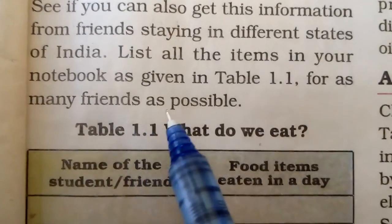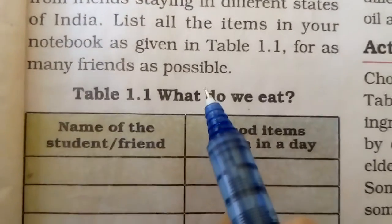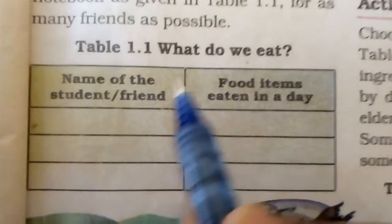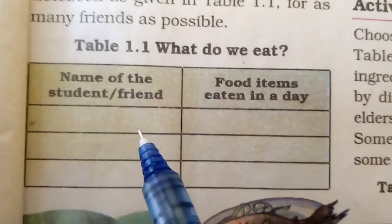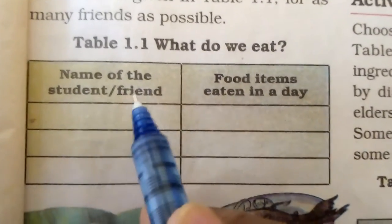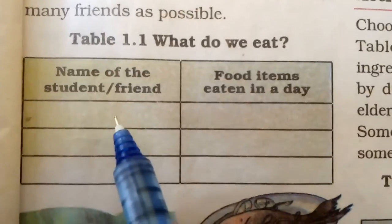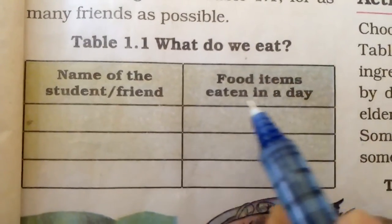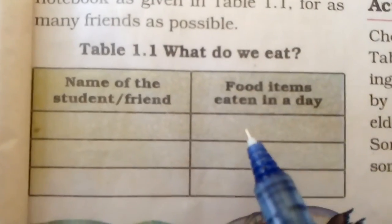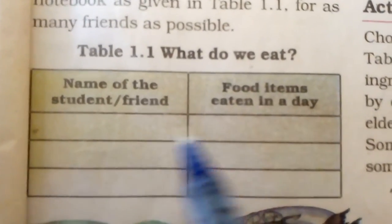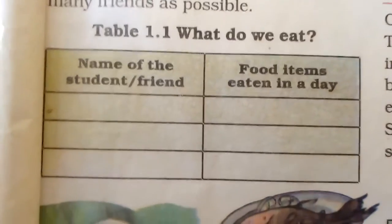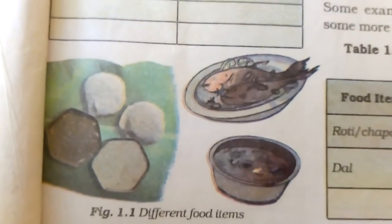Do this for as many friends as possible. Ask them about the food they eat. In the table, write the name of the student or friend, and ahead of that write the food items eaten in a day. You need to prepare this list yourself.